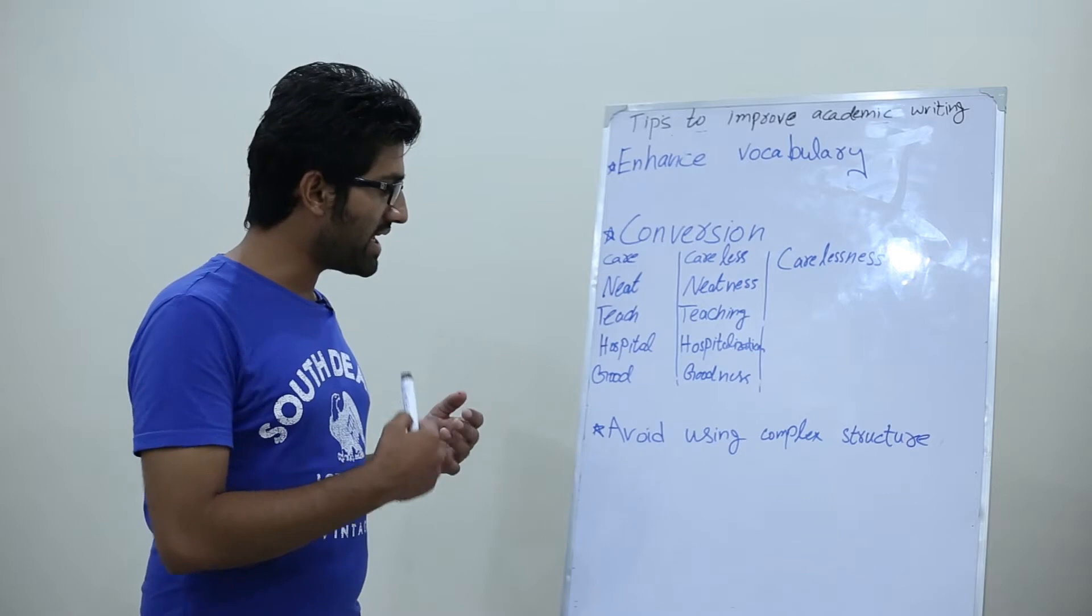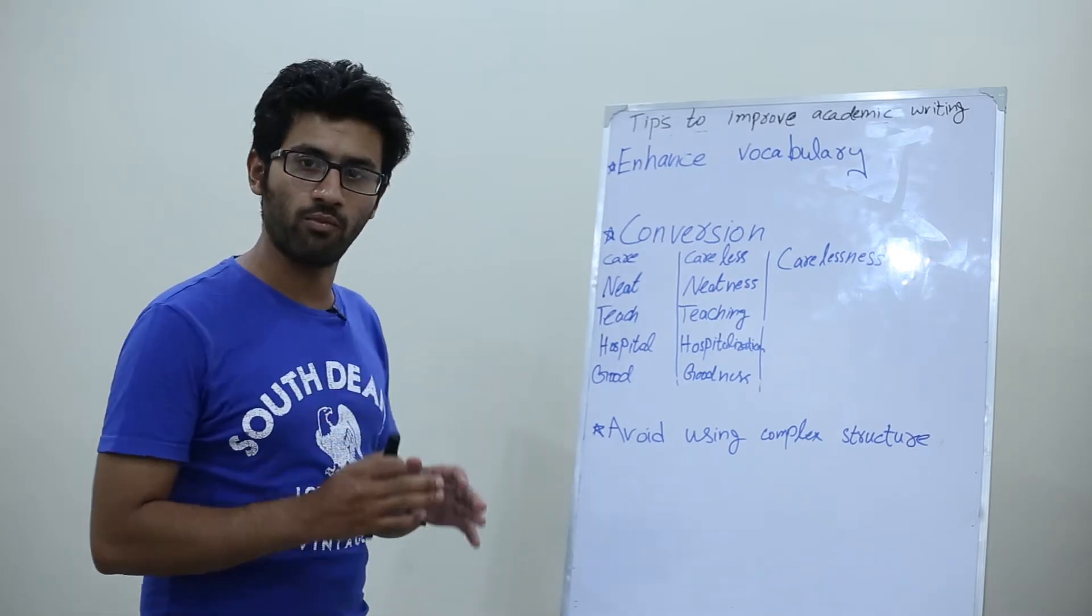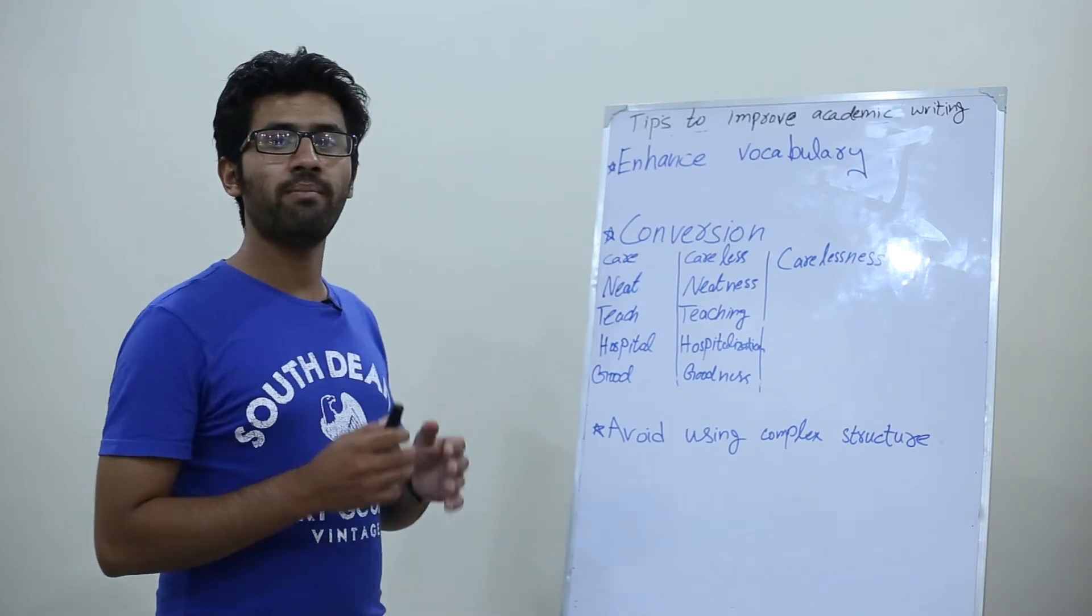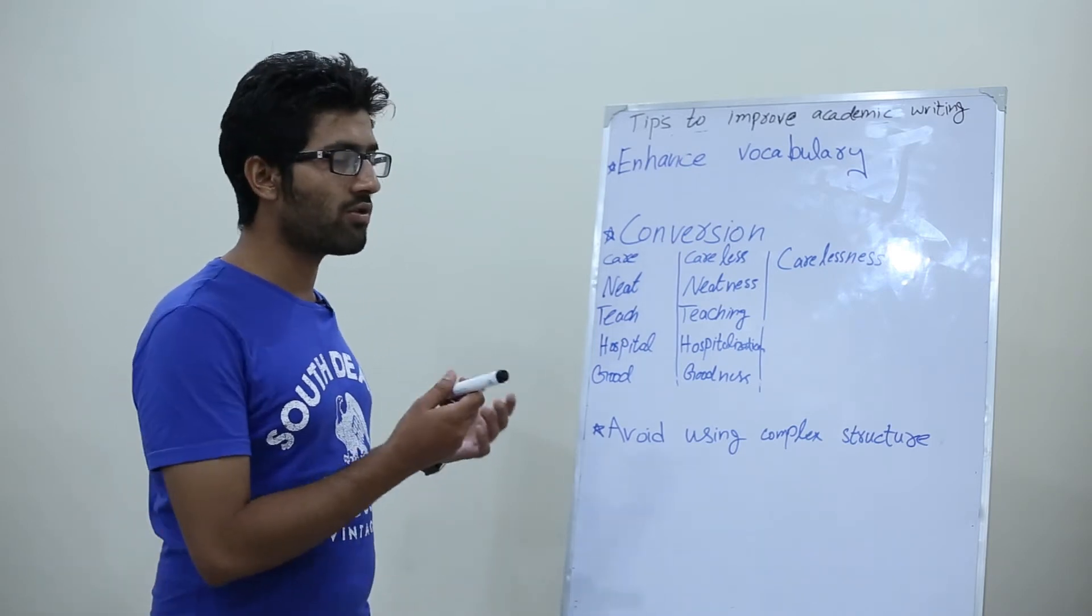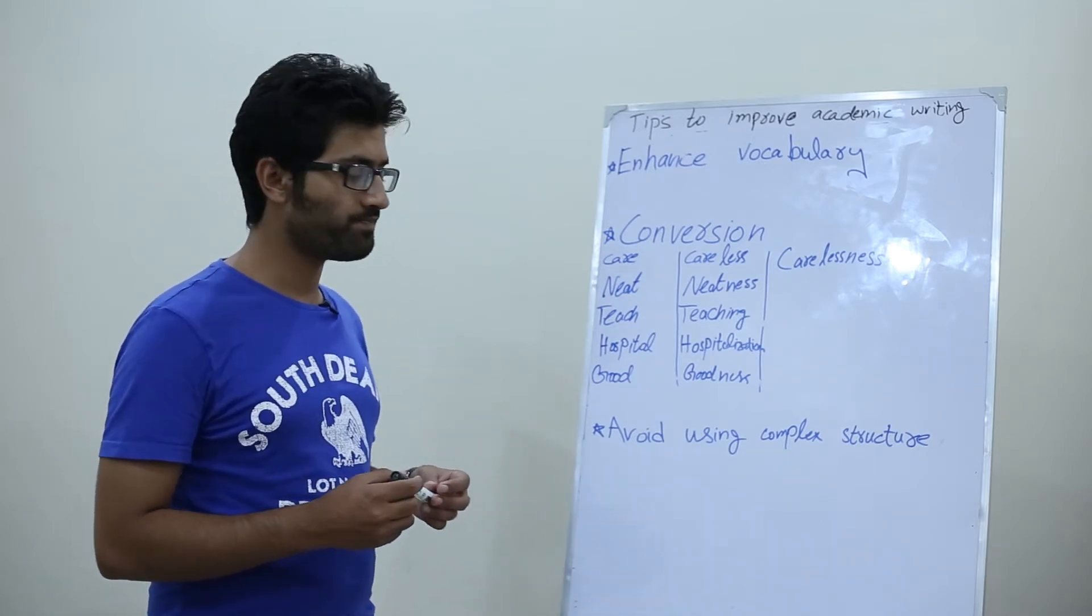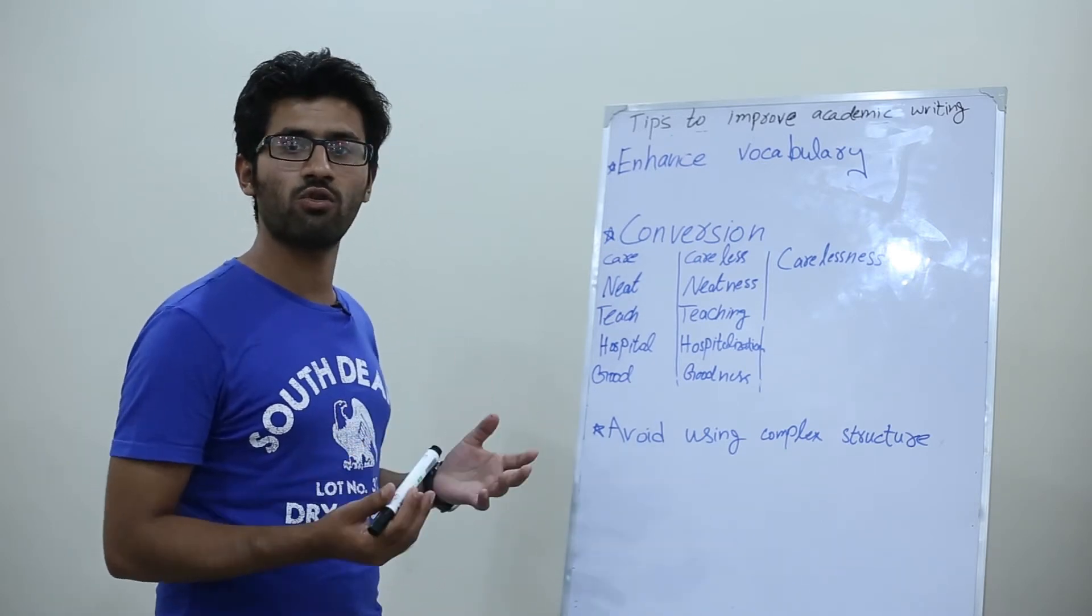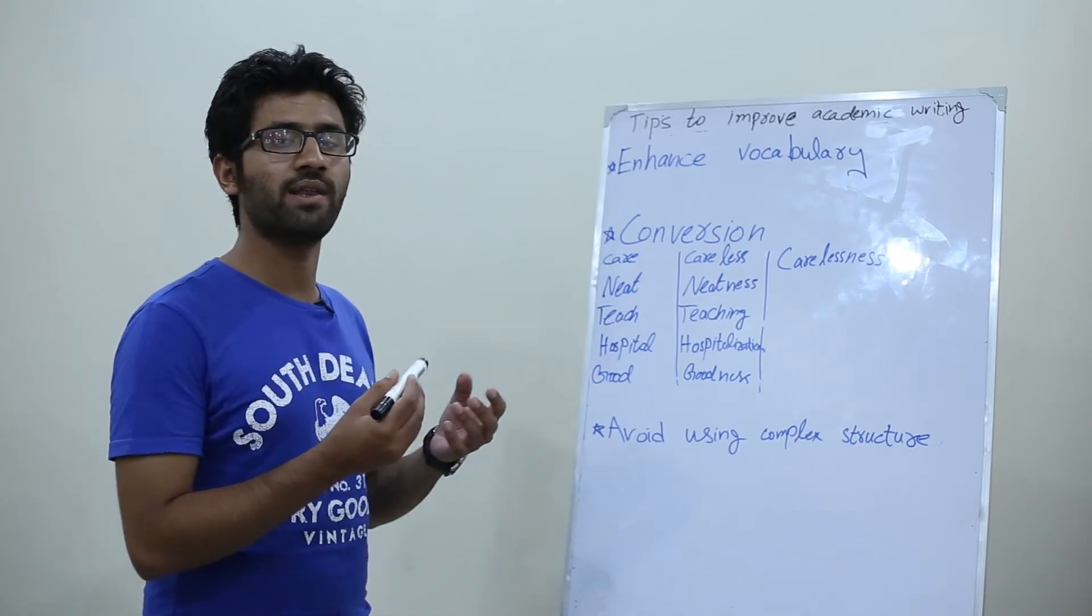The next one is avoid using complex structures. Try to use FANBOYS coordinate conjunctions and make easier sentences because you are at the beginning level and it will give you a good impression. It was all for today. Apply these tips into your writing and get better results.